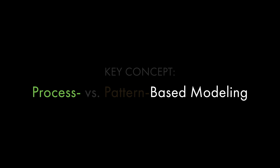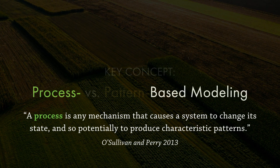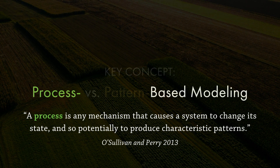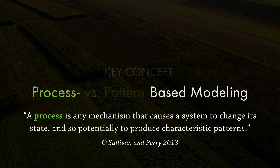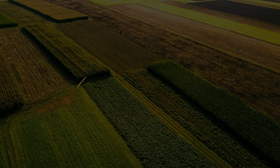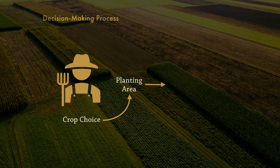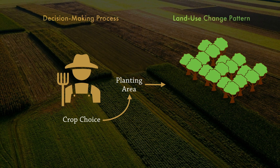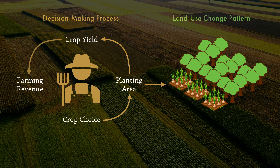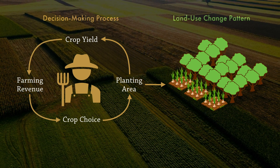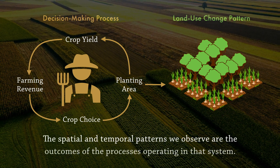Let's take a closer look at what constitutes a process-based model. A process is any mechanism that causes a system to change its state, and so potentially to produce characteristic patterns. For ABMs in socio-environmental systems, we are specifically talking about processes through which agents interact with one another and modify environmental systems, and the subsequent emergent environmental system outcomes that feedback on agents in the social system. Consider a hypothetical farmer's decision-making process: the farmer chooses what types of crops to plant and the area in which to plant them, depending on the suitability of his land and the existing land cover. These choices lead to observable patterns of land use change on the landscape. The farmer observes crop yields at the end of the growing season, and if it was a good year and gets a good price, he might make a profit. That in turn can motivate the decision to expand crop lands in the next time step, which would change the pattern of land use and transform the ecology in and around the farmer's field.